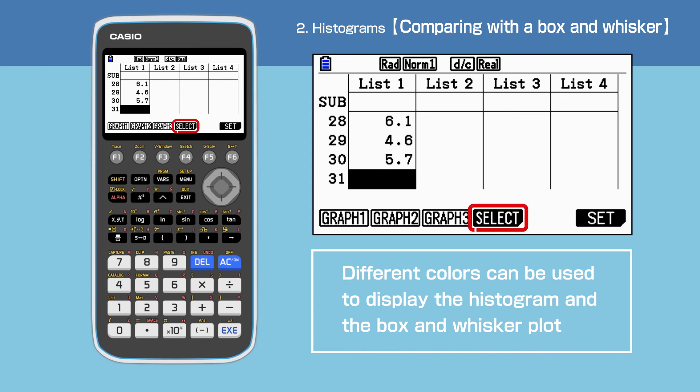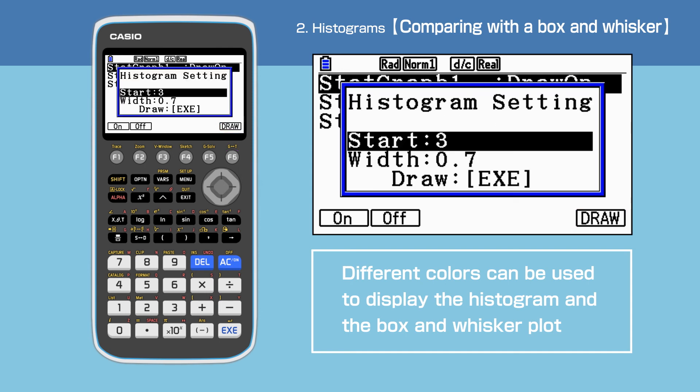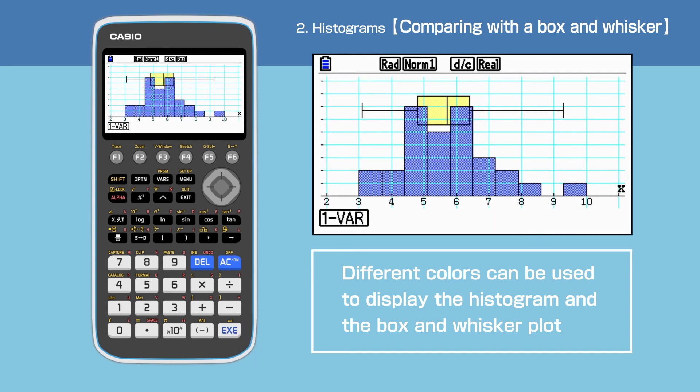Press F4, select, to select the two graphs to be drawn on the same screen. Press F1 to switch on start graph 1 and verify start graph 2 is still switched on as well. Pressing F6 will let us check the starting value and the width of the histogram. Press execute to draw.